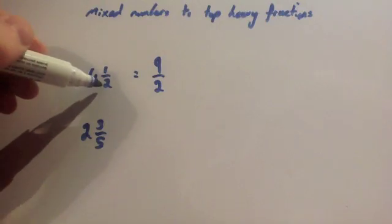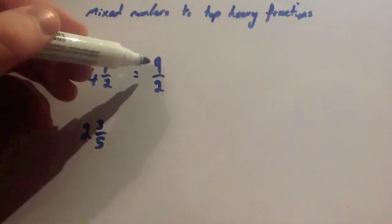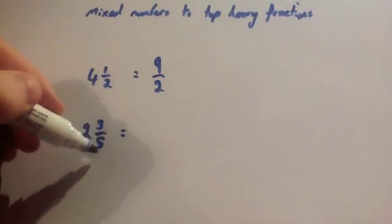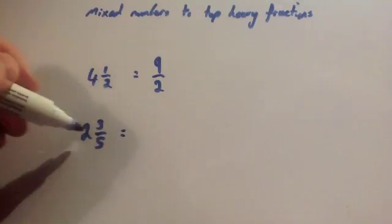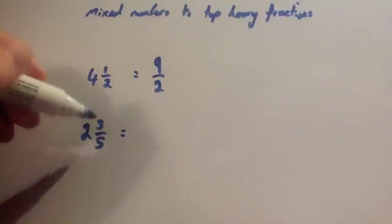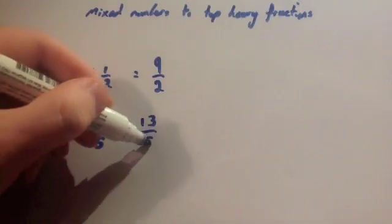So really just times the whole number by the denominator, add on the numerator, and the denominator stays the same. So if you want to make 2 3/5 into a top heavy fraction, you do 2 times 5 is 10, plus 3 is 13. And the denominator stays the same.